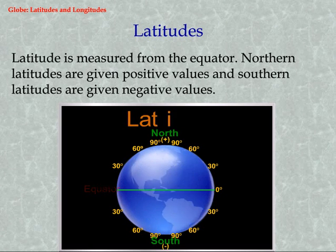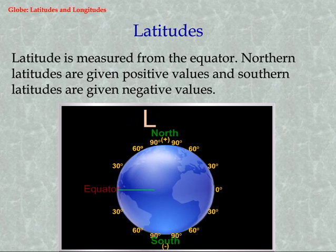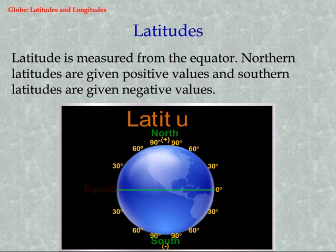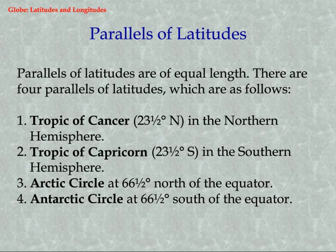Latitudes. Latitude is measured from the equator. Northern latitudes are given positive values and Southern latitudes are given negative values. Parallels of latitudes are of equal length. There are four parallels of latitudes.